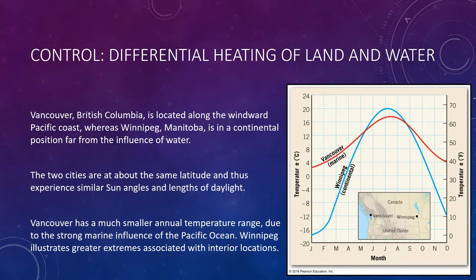On a different scale, the moderating influence of water may also be demonstrated when comparing temperature variations in the northern and southern hemispheres. In the northern hemisphere, 61% is covered by water and land accounts for the remaining 39%. In the southern hemisphere, however, 81% is covered by water and only 19% by land.